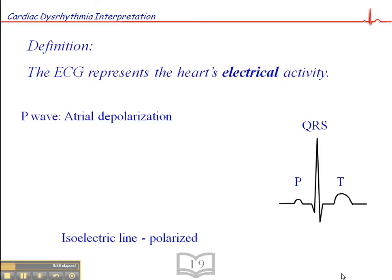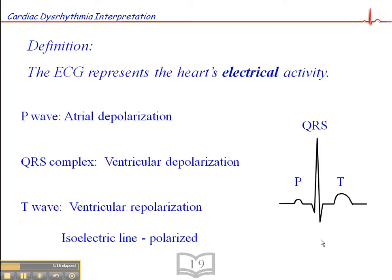Now if we look at the different components, the P wave here represents atrial depolarization. So this is a wave of electrical current across both atria simultaneously. The QRS represents ventricular depolarization. This would be a wave of electrical current across both ventricles simultaneously. And then we have the T wave, which represents ventricular repolarization.